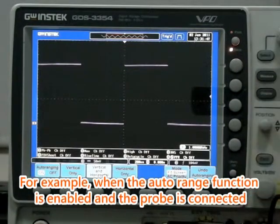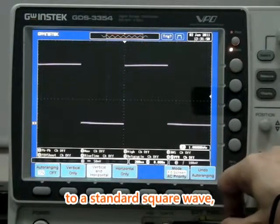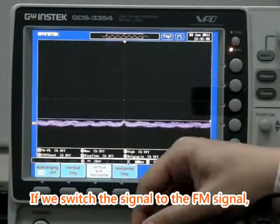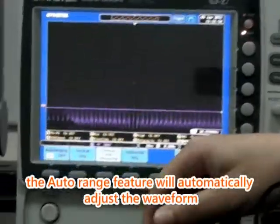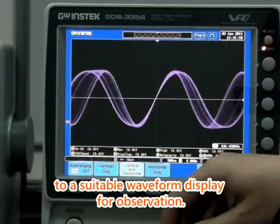For example, when the auto range function is enabled and the probe is connected to a standard square wave, if we switch the signal to the FM signal, the auto range feature will automatically adjust the waveform to a suitable waveform display for observation.